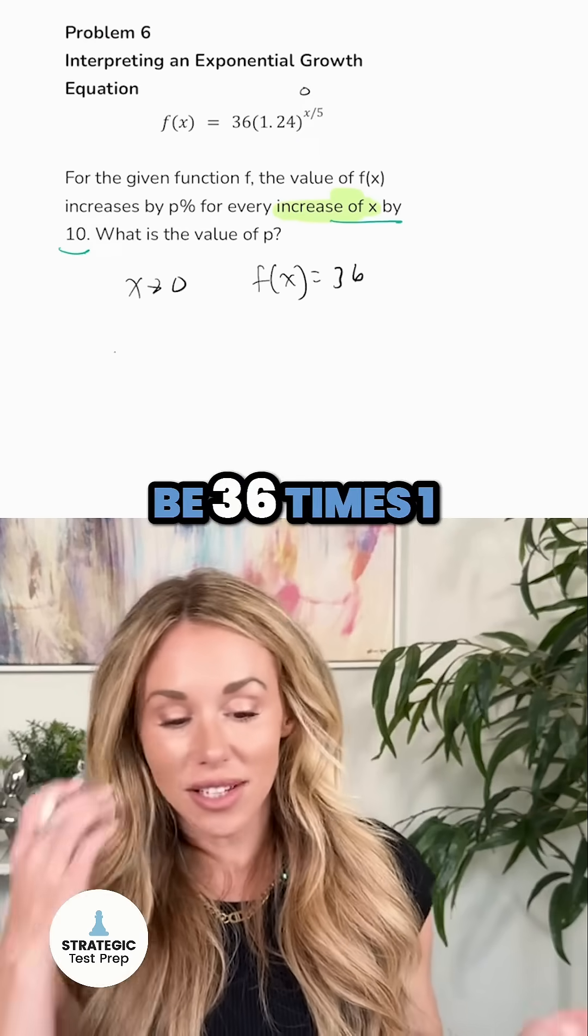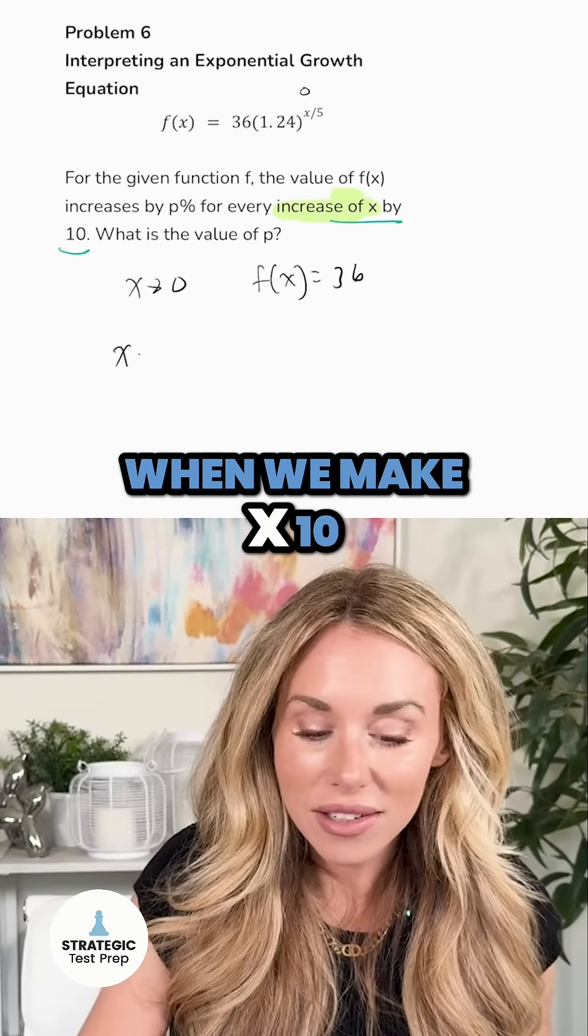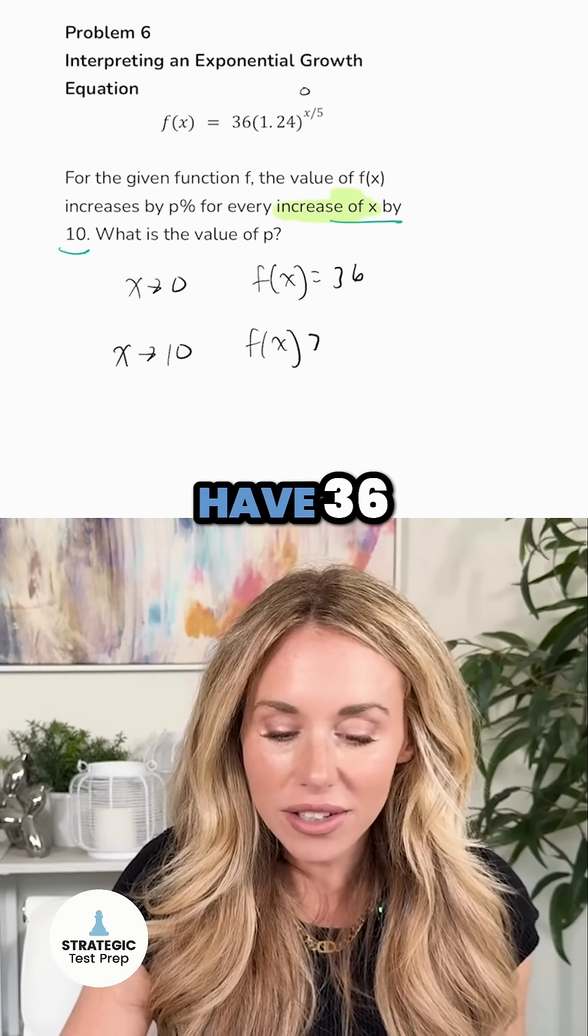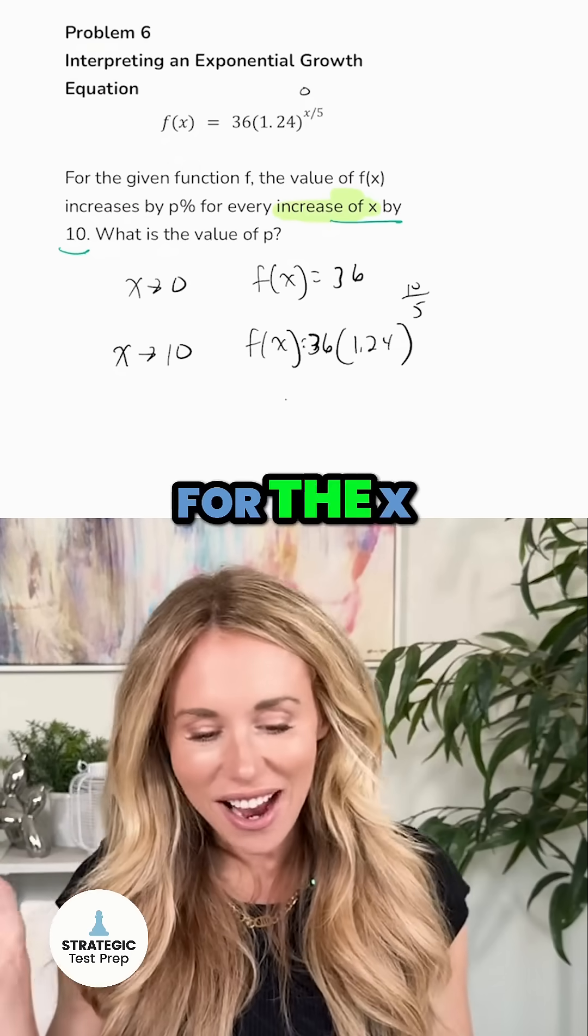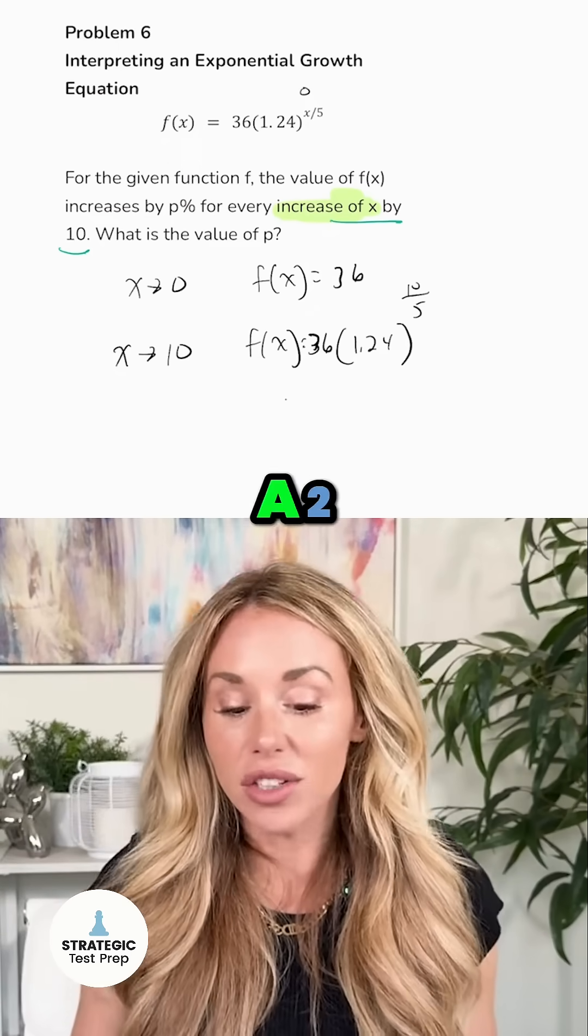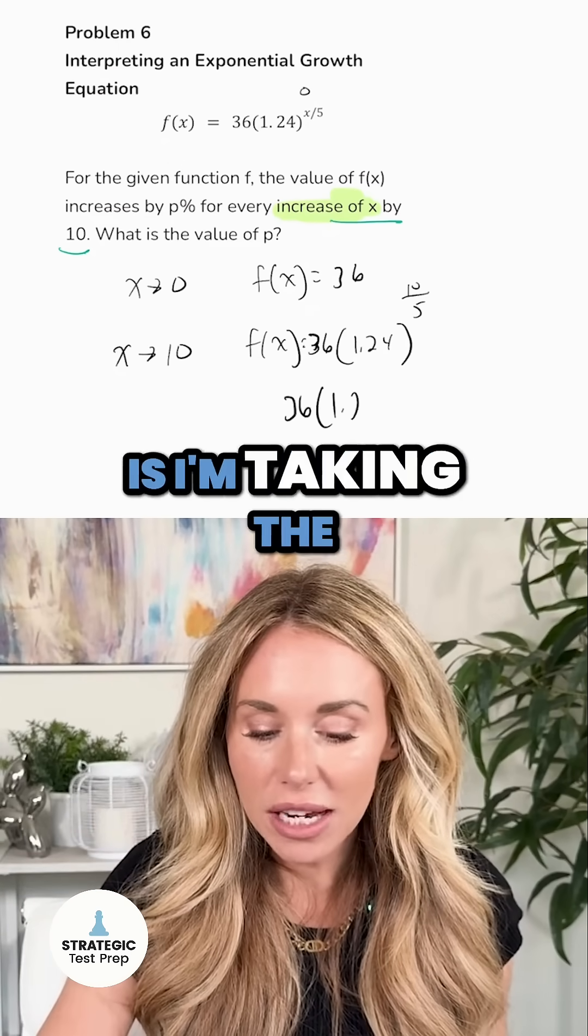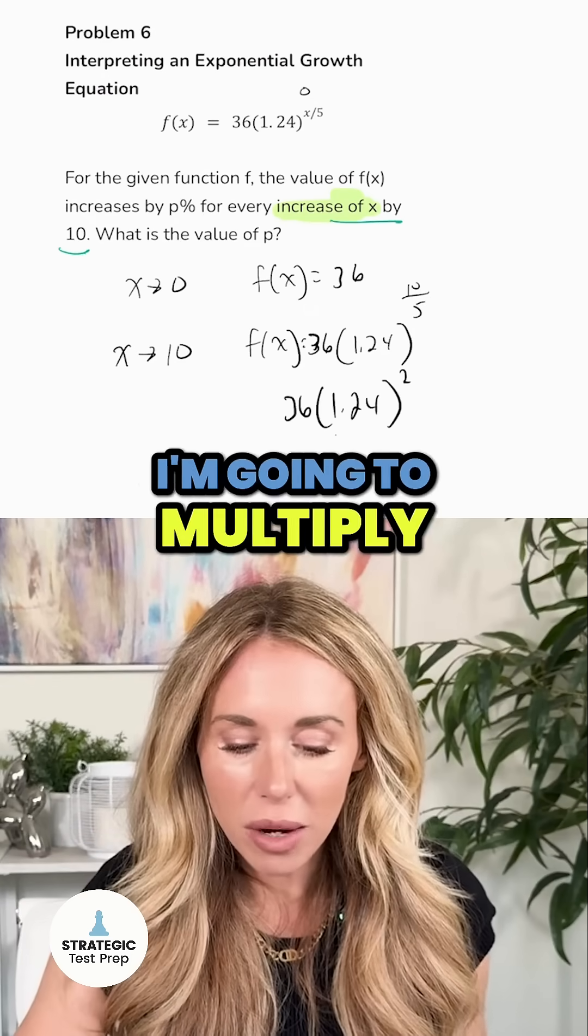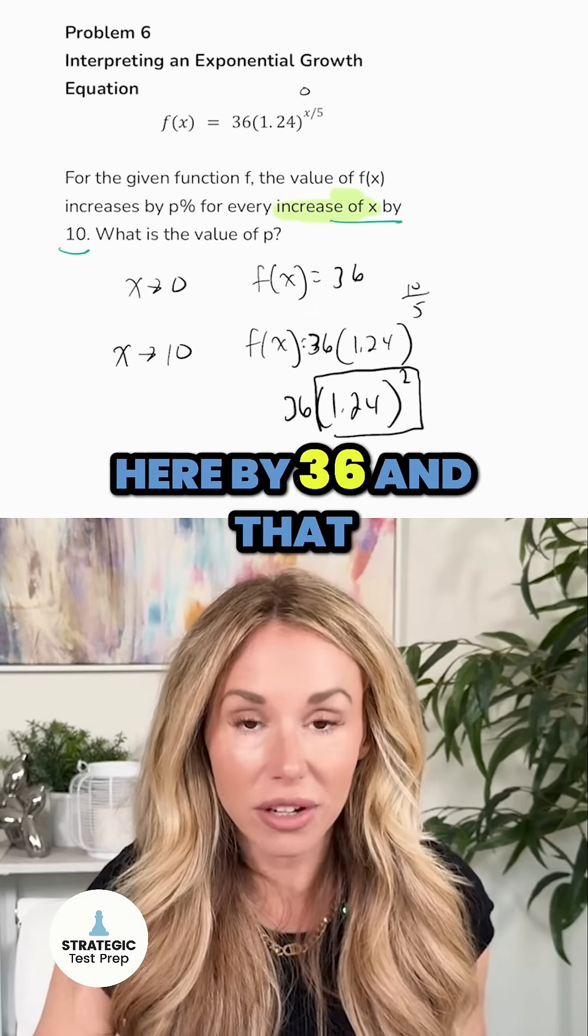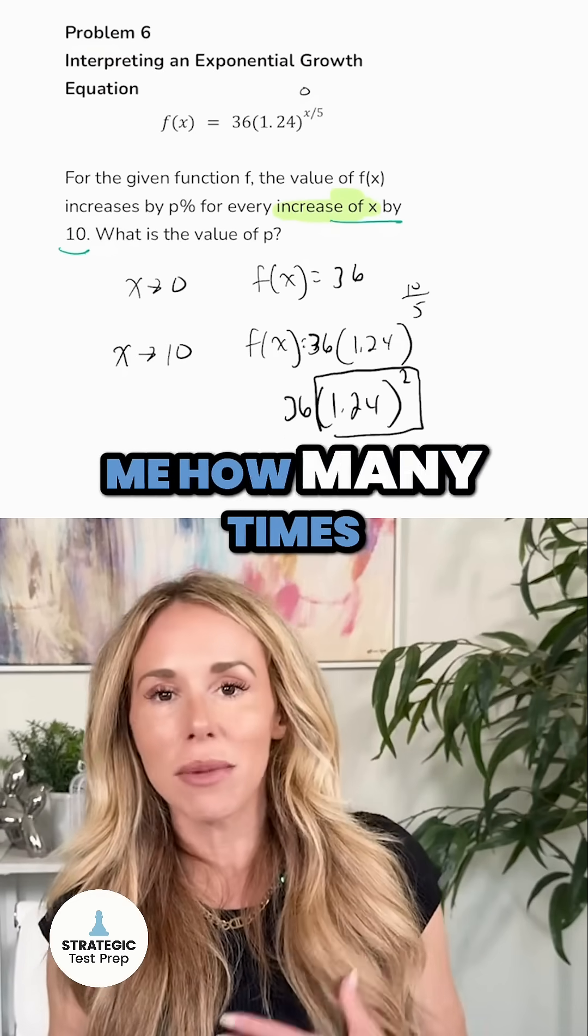Now when we make x 10, what happens is we have 36 times 1.24 to the (10 divided by 5). I'm putting 10 in for the x and that ends up being a 2. So what I'm doing is I'm taking the 1.24 and I'm squaring it. So essentially I'm going to multiply whatever number I get here by 36, and that's going to tell me how many times bigger it is.